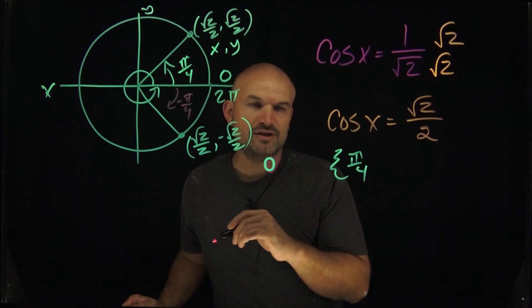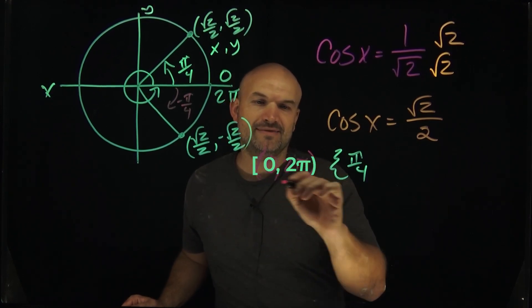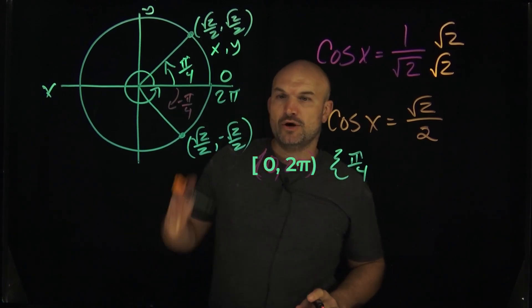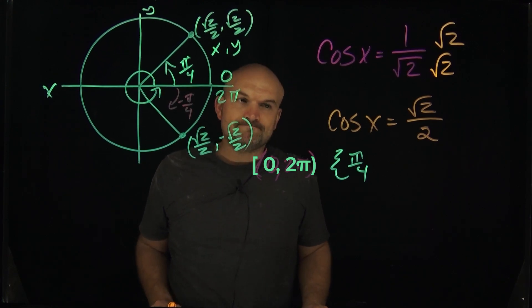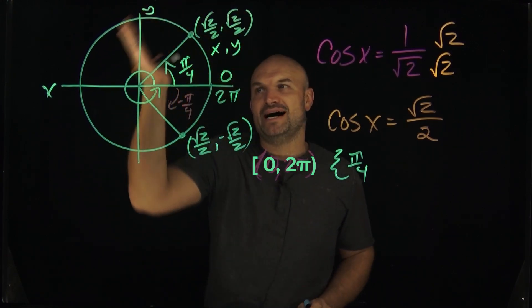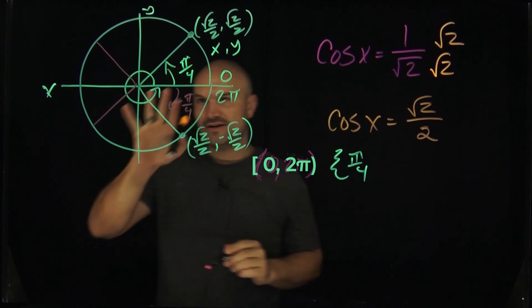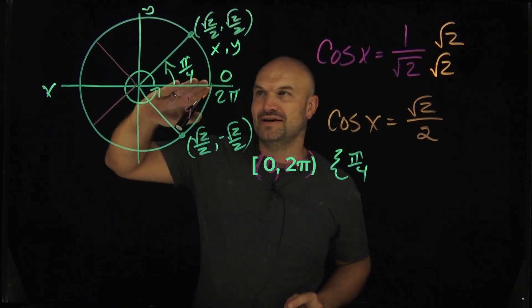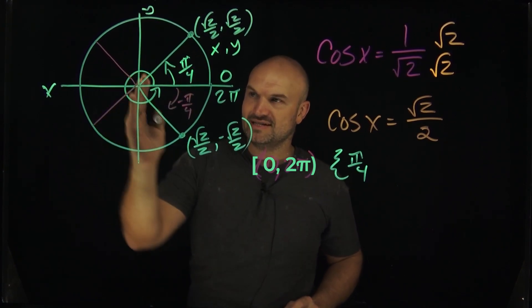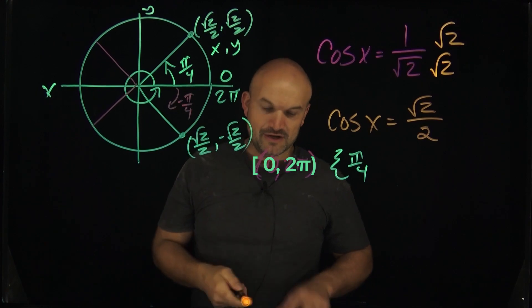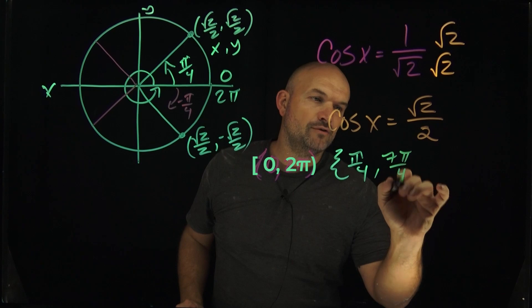Whether you use negative pi over 4 depends on your restrictions. Here, I'm only looking for values between 0 and 2pi, so negative pi over 4 — being a negative angle — is not within this restriction. That means we continue in the positive direction. We can count: pi over 4, 2pi over 4, 3pi over 4, 4pi over 4, 5pi over 4, 6pi over 4, 7pi over 4. Therefore, the other angle that satisfies this equation is 7pi over 4.